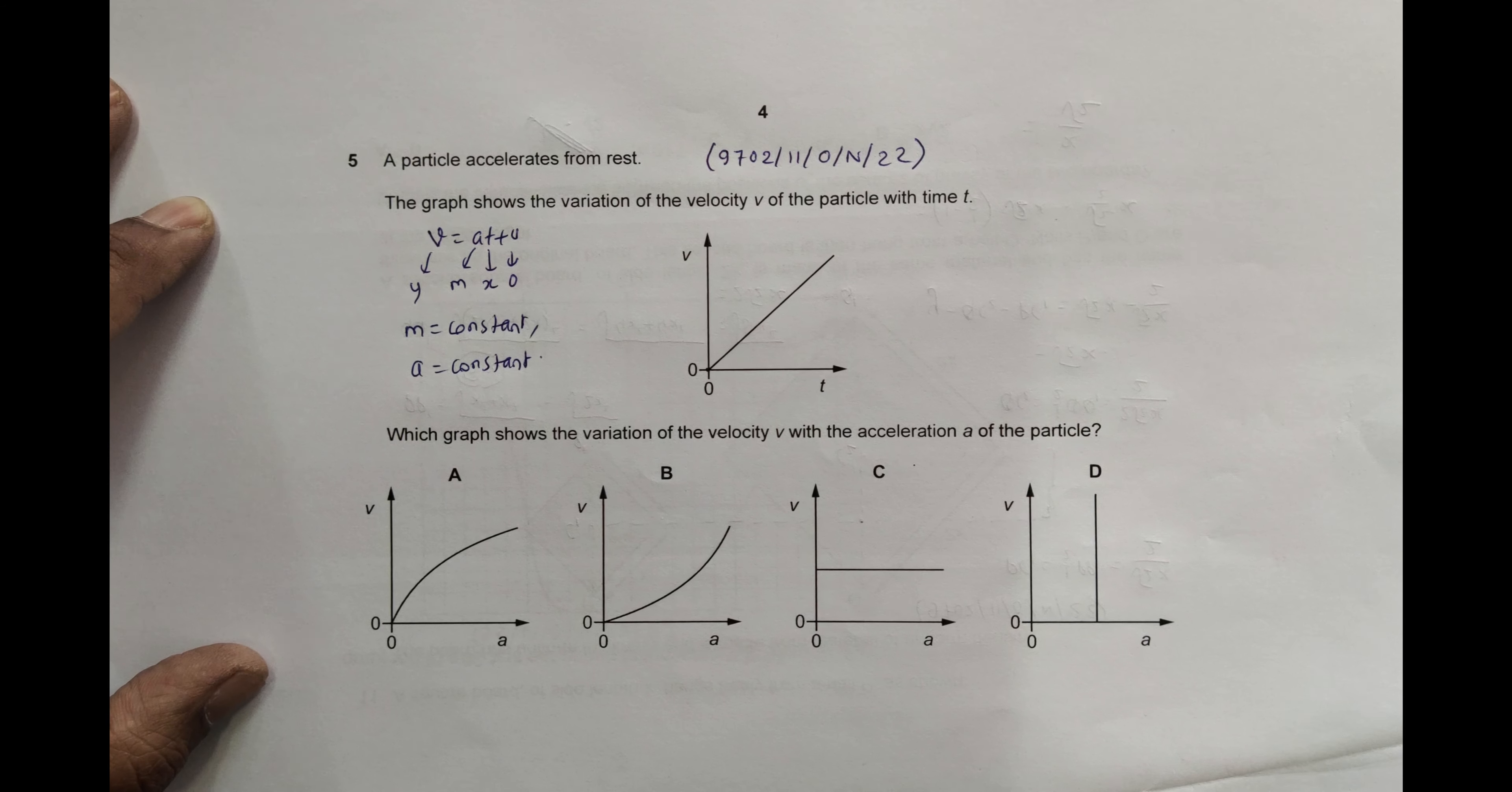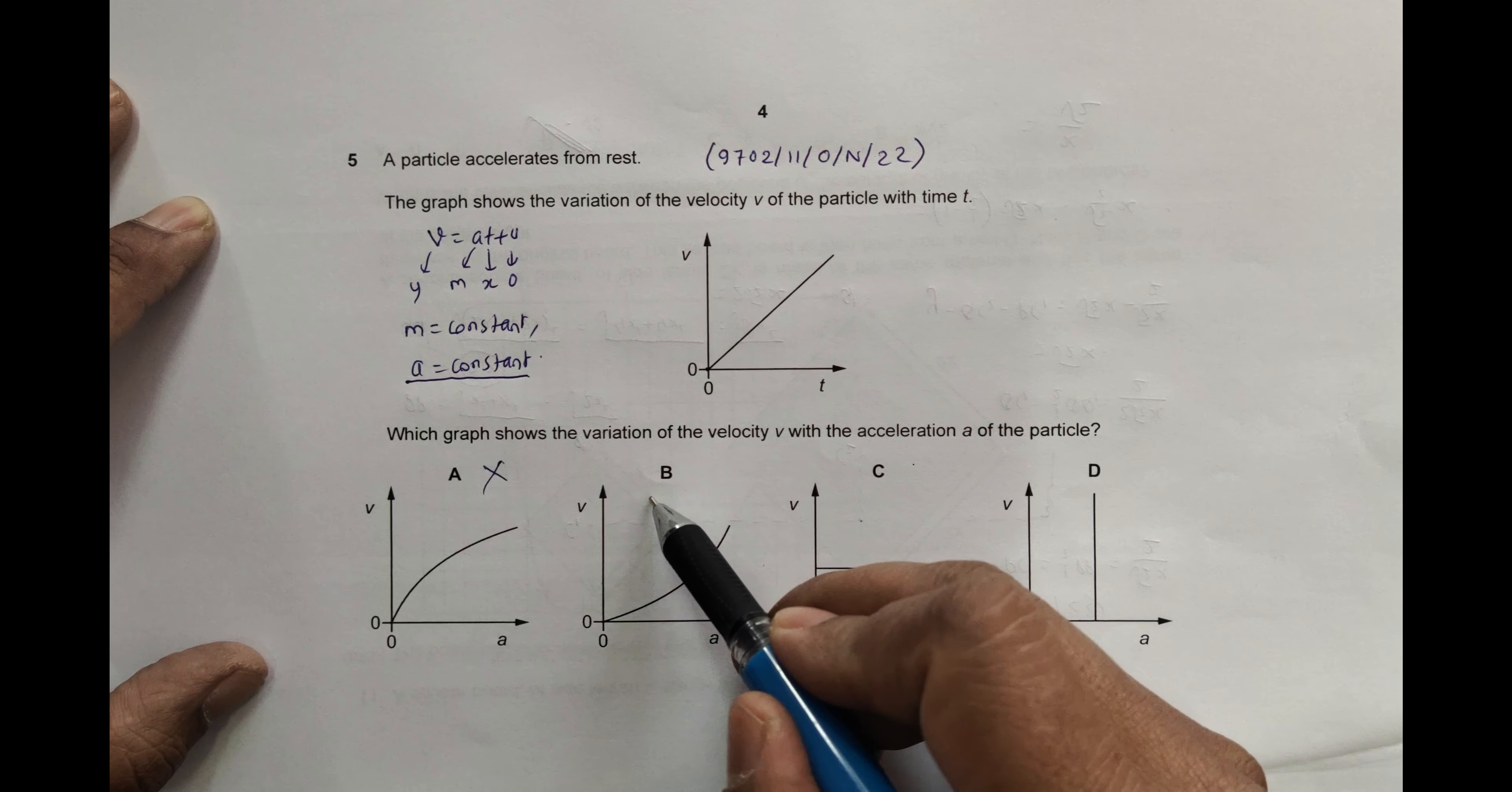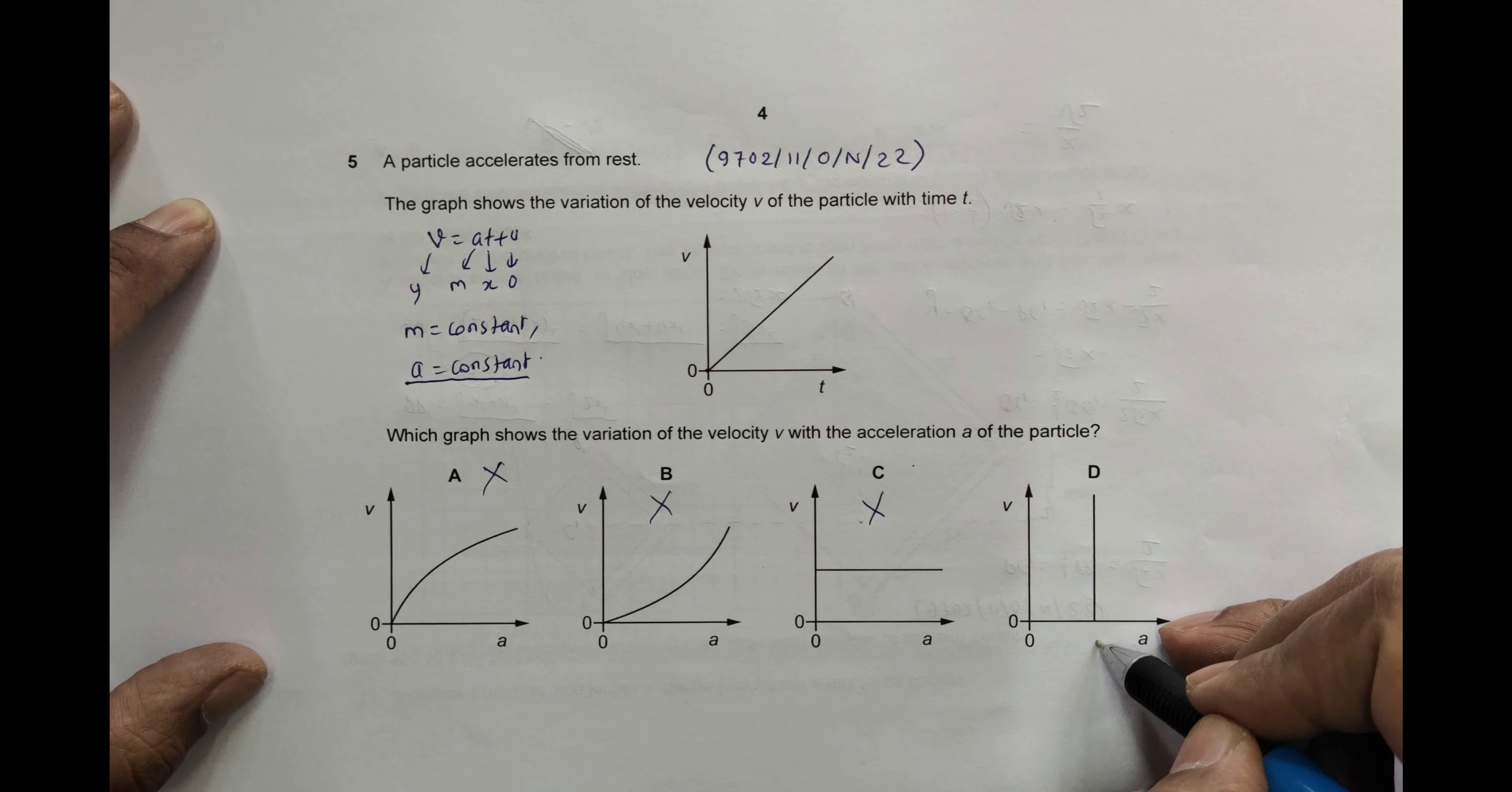Let me go through the choices. Here a varies, so wrong choice. Here also a varies, wrong choice. Here also a varies while V is constant, wrong choice. And here V varies while a is constant. So V varies, a constant - that's why D should be the proper choice.